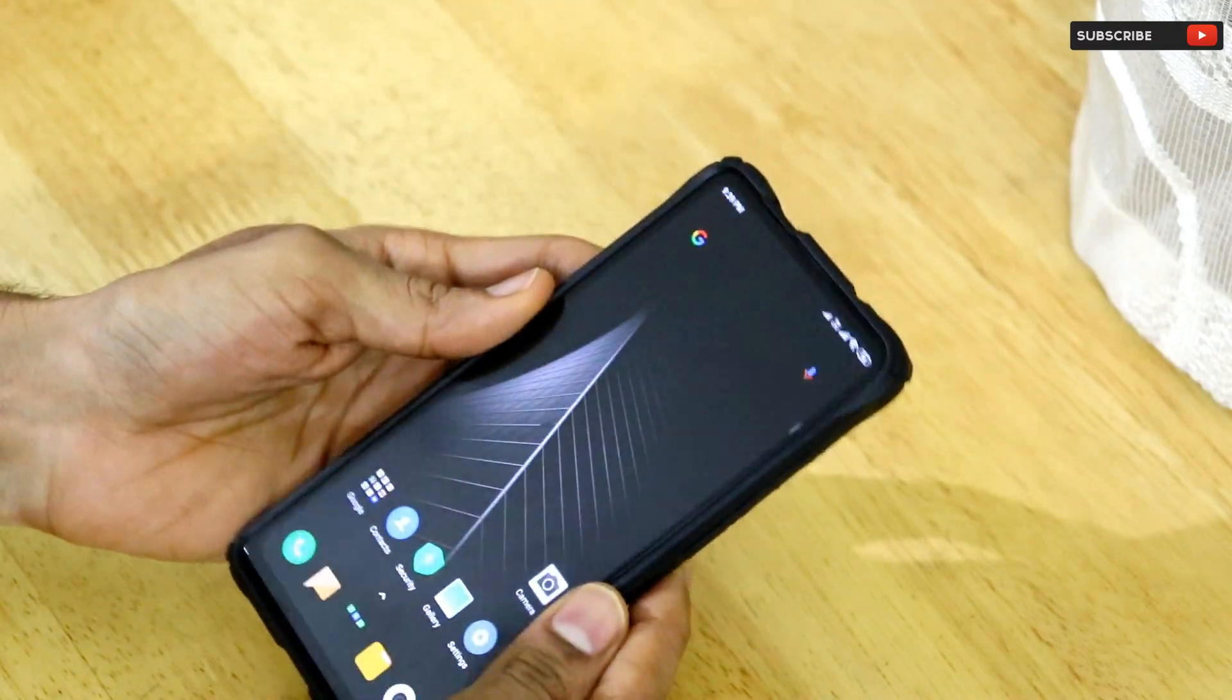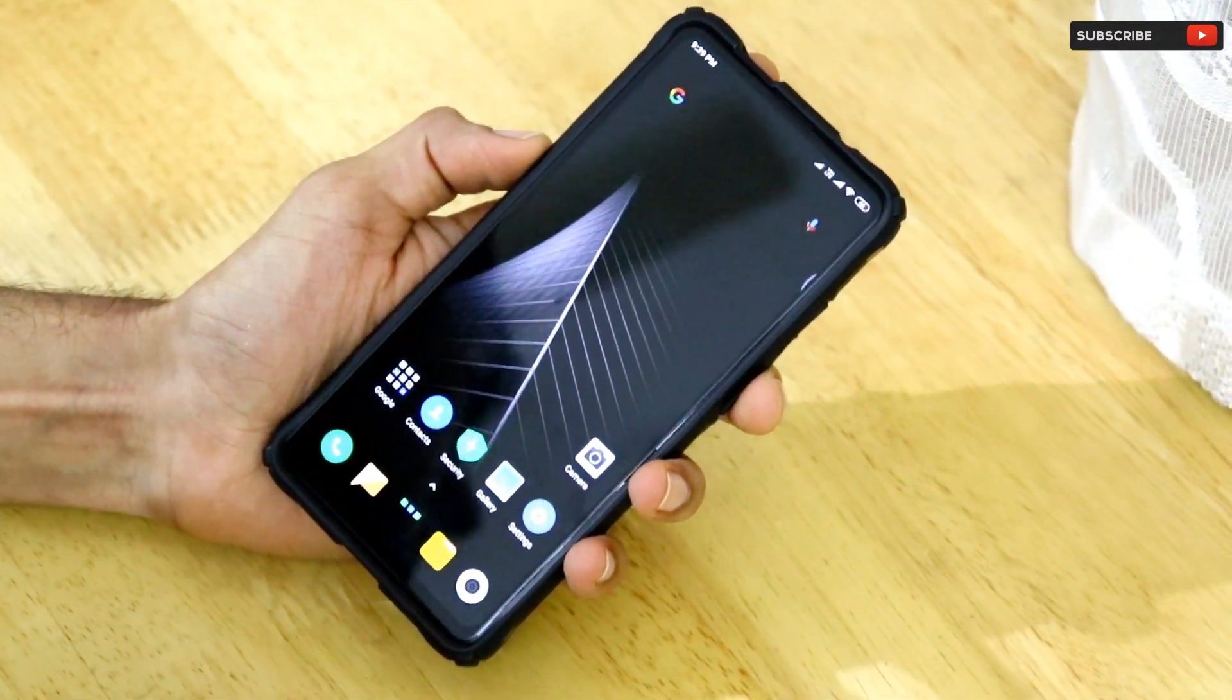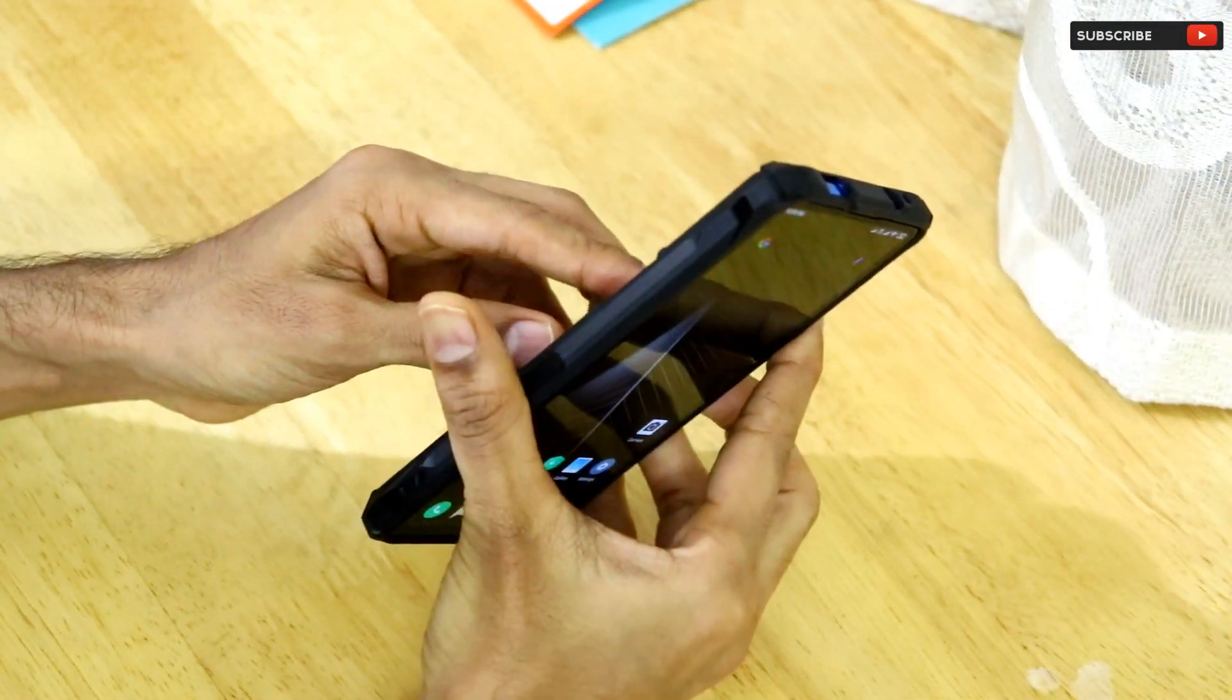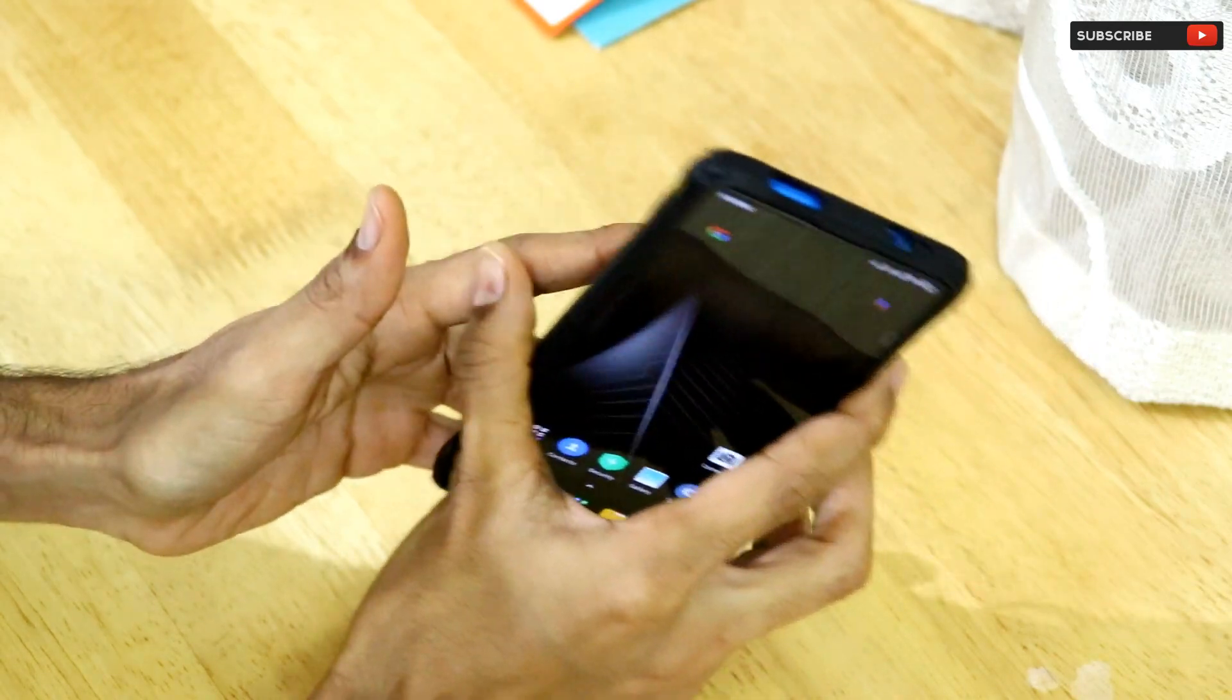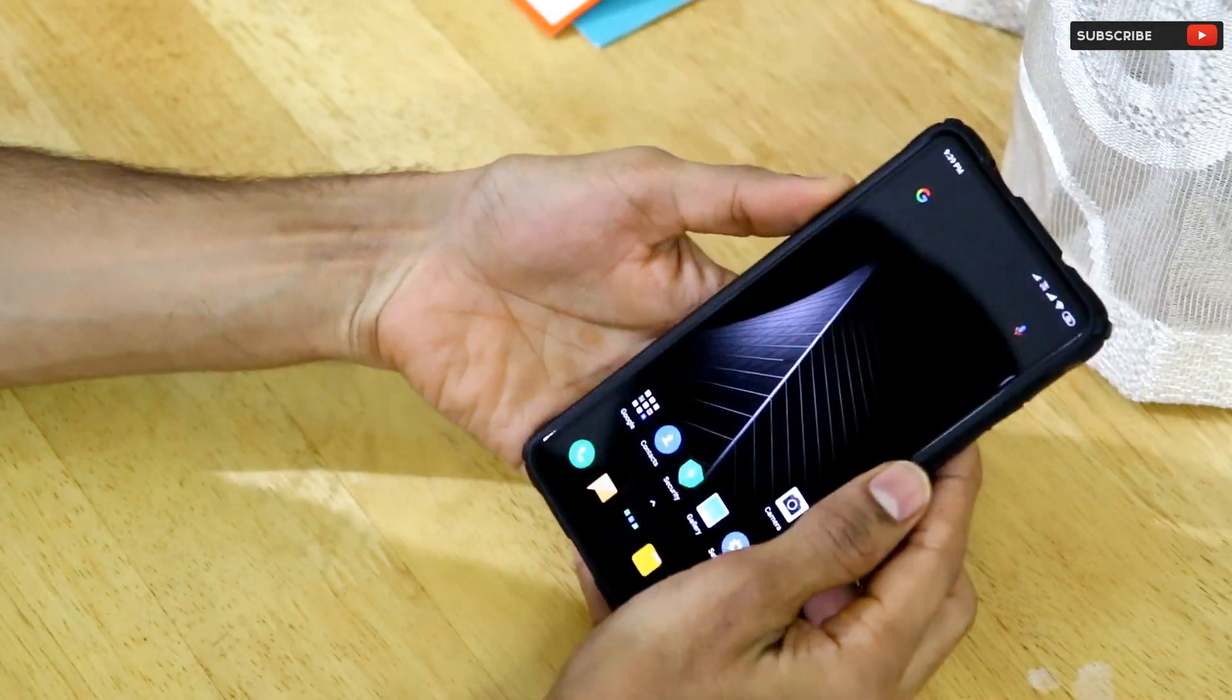So if you have a 6.8-inch display smartphone, this type of Mi Flex Grip will easily come in handy to make sure you can hold your smartphone in one hand and easily type for chatting on WhatsApp or any other application.